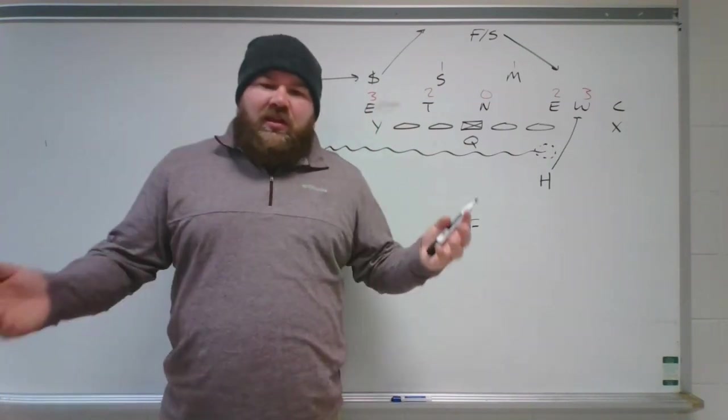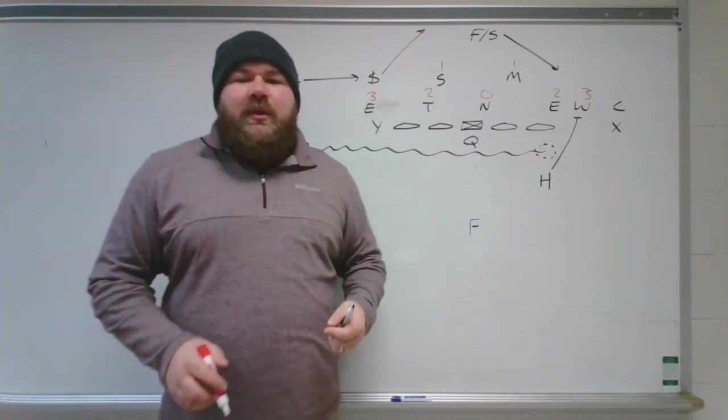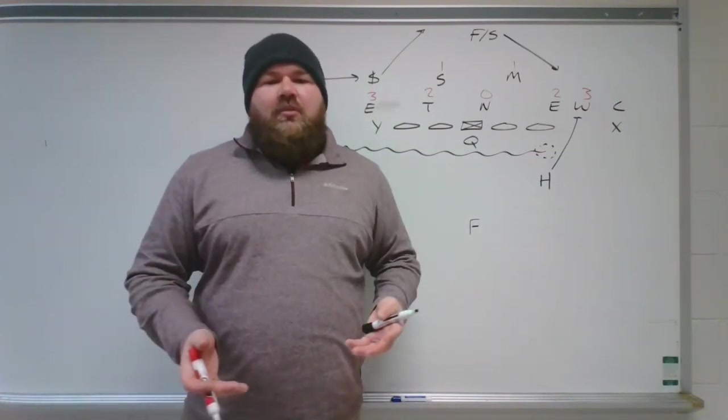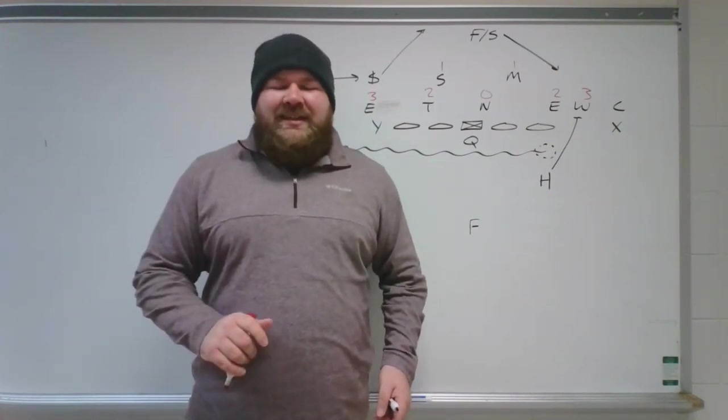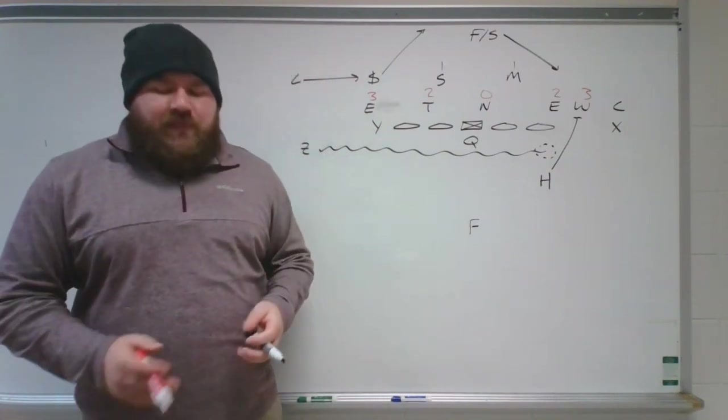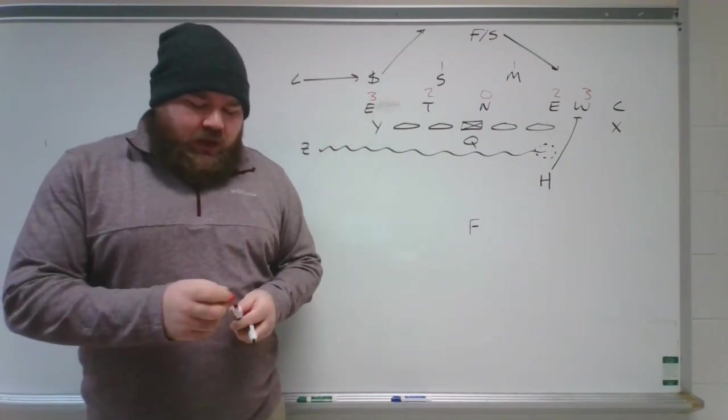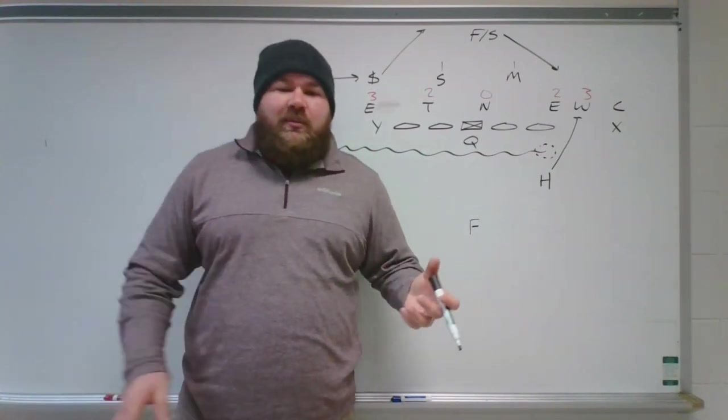So again, if the center blocks the zero, who do you think blocks ones? You're right, that would be the guard. And if the guard blocks ones, who blocks the twos? You're also right, that would be the tackles. Block twos, and this is just, generally speaking, because of pre-snap offenses determining who we are most likely to block.